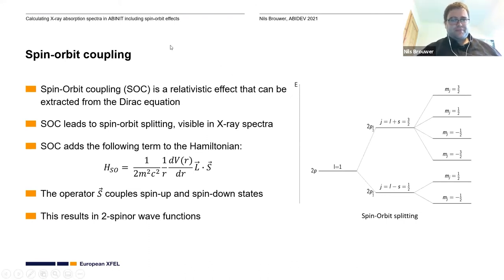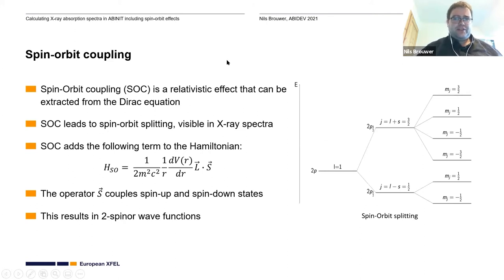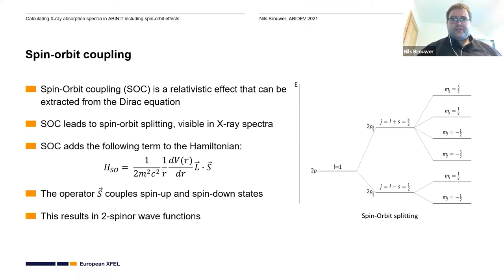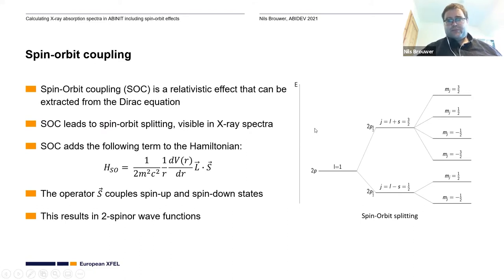Spin-orbit coupling is a relativistic effect that you can get as an approximation from the Dirac equation. And one of the most important effects of spin-orbit coupling is the spin-orbit splitting.